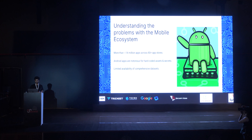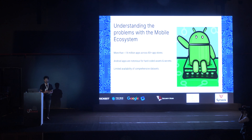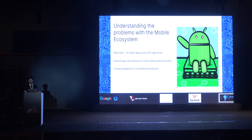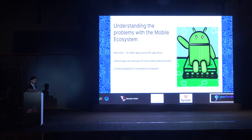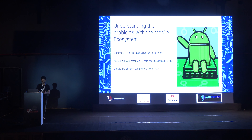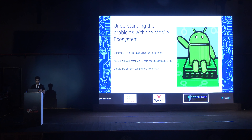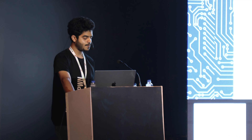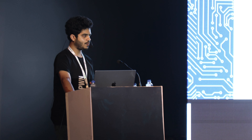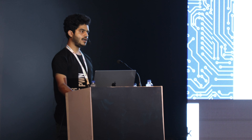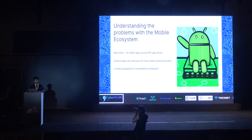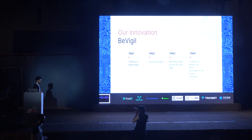The last problem is the limited availability of comprehensive datasets and investigative tools. We have Shodan for web applications and networks, but when it comes to Android applications there are no such tools. For example, if you found a zero-day in a popular library widely used among Android developers, you literally have no way to identify which other applications are using the same library. So these are the problems we saw, and we came up with B-Vigil as our solution.